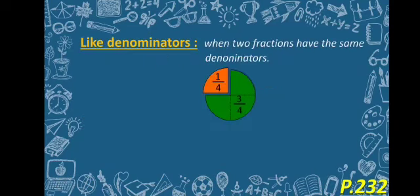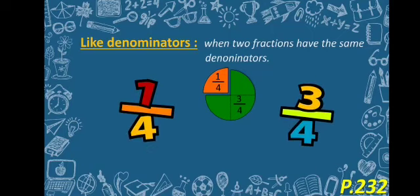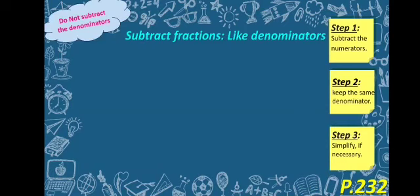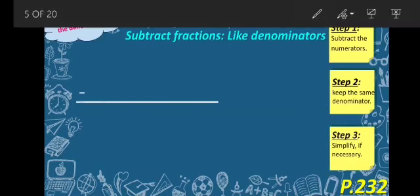The next one is Like Denominator, and this is what we call two fractions when they have the same denominator, like 1 over 4 and 3 over 4. They both have 4 as the bottom number, so they are like denominators. Our lesson today is about subtracting fractions with like denominators.